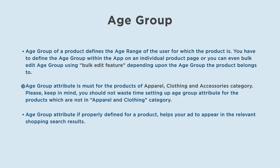Age group attribute is a must for the products of apparel, clothing and accessories category. Please keep in mind, you should not waste time setting up age group attribute for the products which are not in the apparel and clothing category. Age group attribute, if properly defined for a product, helps your ad to appear in the relevant shopping search results.